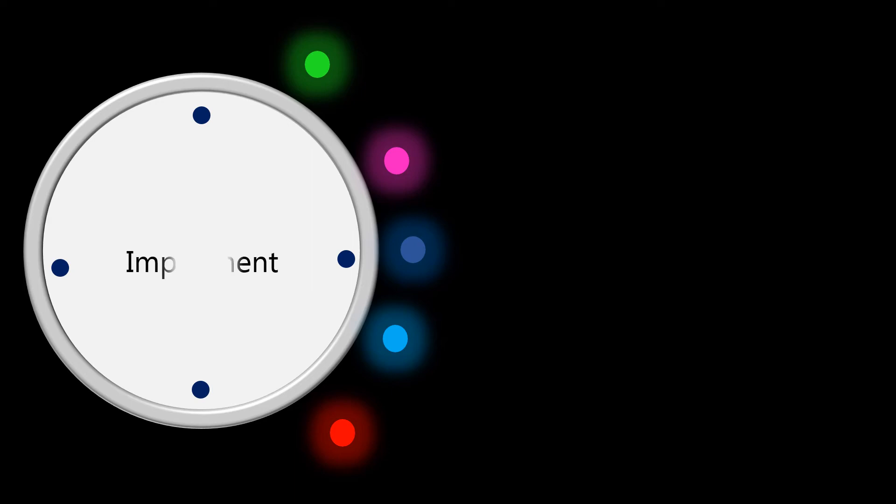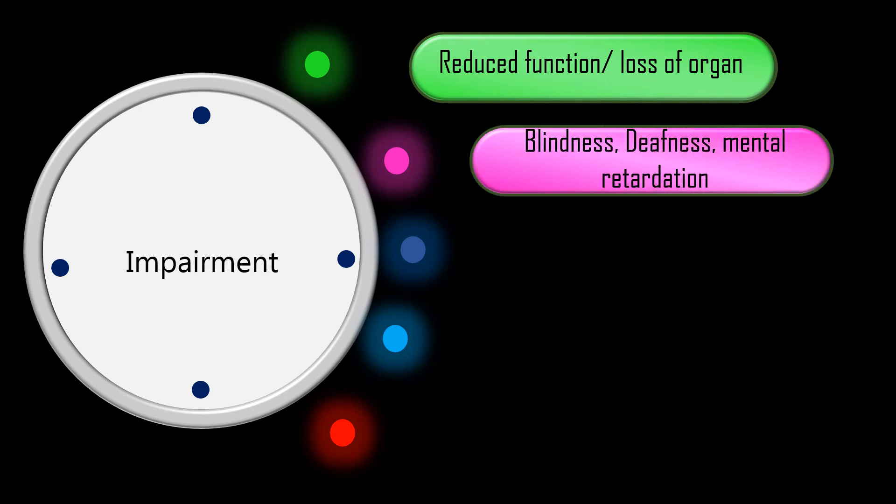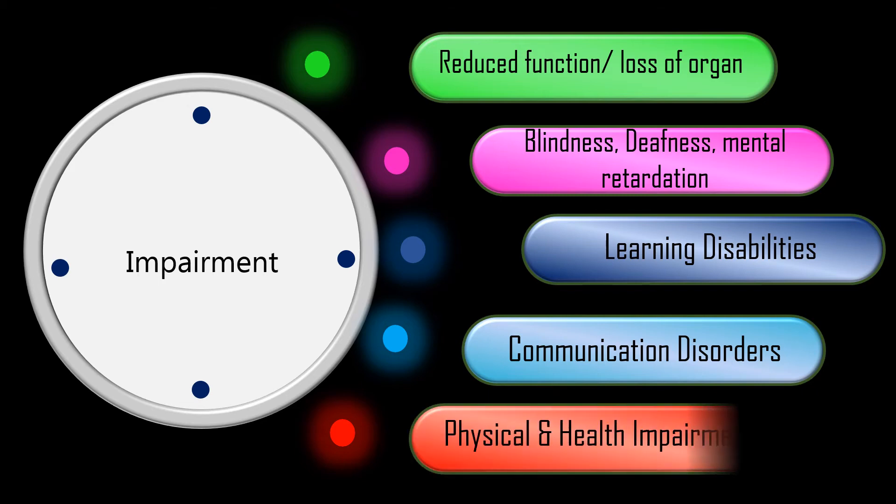Impairment or disability refers to reduced function or loss of a specific part of the body or organ. A person may have disabilities like blindness or low vision, deafness or hard of hearing condition, mental retardation, learning disabilities, communication disorders, emotional and behavioral disorders, physical and health impairments, and severe disabilities.